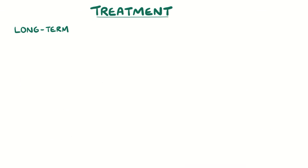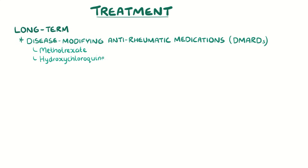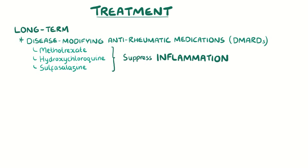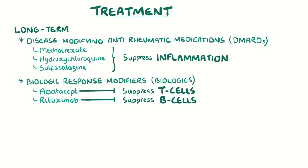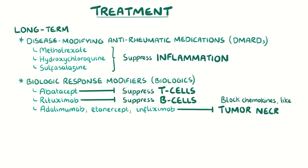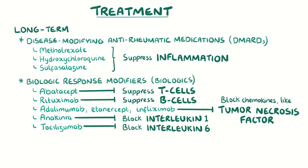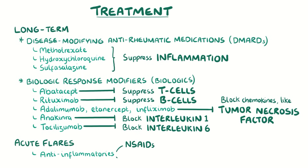The long-term management of rheumatoid arthritis involves disease-modifying anti-rheumatic medications like methotrexate, hydroxychloroquine and sulfasalazine, which help suppress the inflammation. There are also biologic response modifiers, or biologics. Some, such as abatacept, suppress T cell activity; others, such as rituximab, suppress B cells. Biologics such as adalimumab, etanercept, and infliximab block various cytokines like tumor necrosis factor. Anakinra blocks interleukin 1, and tocilizumab blocks interleukin 6. Treatment of acute flares can be done with anti-inflammatory medications like NSAIDs, as well as short-term use of glucocorticoids.